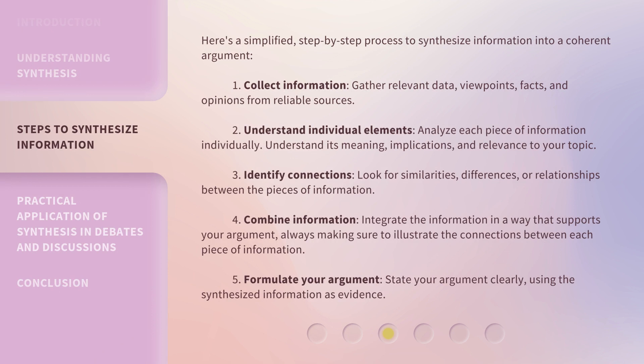Here's a simplified, step-by-step process to synthesize information into a coherent argument. Step 1: Collect information — gather relevant data, viewpoints, facts, and opinions from reliable sources. Step 2: Understand individual elements — analyze each piece of information individually, and understand its meaning, implications, and relevance to your topic.